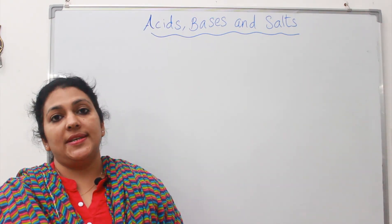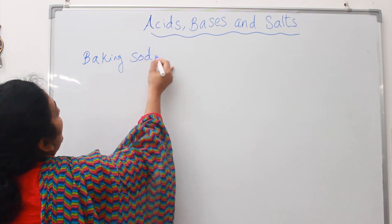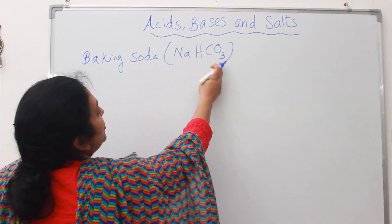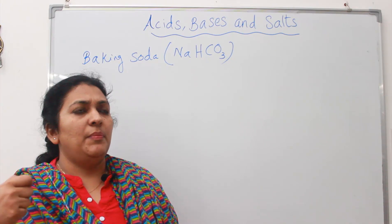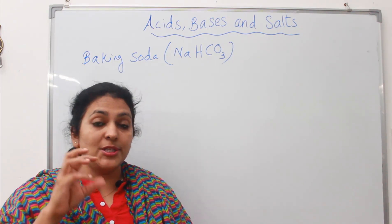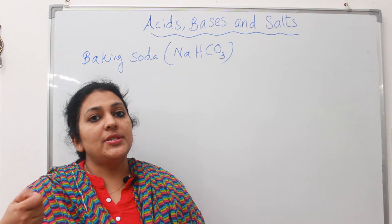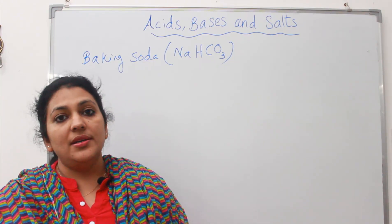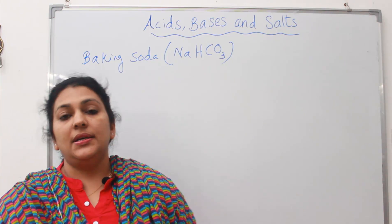The next salt we are going to discuss is baking soda. Baking soda has the chemical formula NaHCO₃, that is sodium hydrogen carbonate. Baking soda is a white color powder present in almost all kitchens — to bake cakes, to make the cake soft and spongy, for making cooking faster, and to make crispy snacks like pakoras, mixture, and chips.